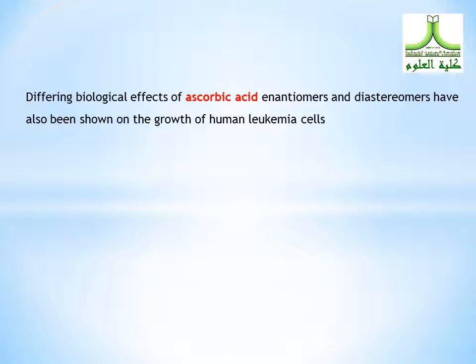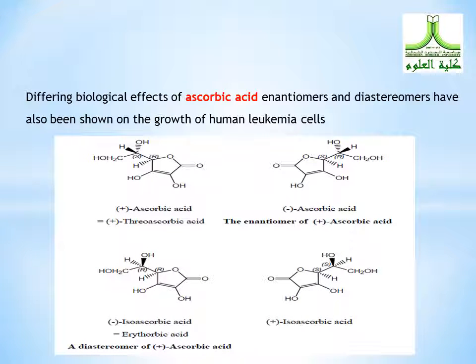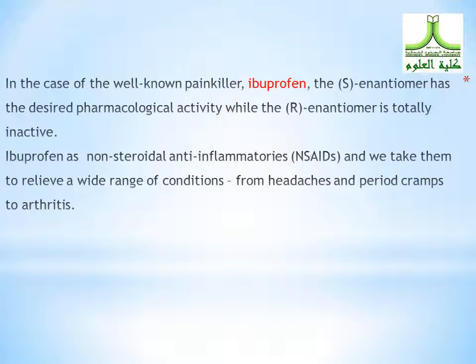Differing biological effects of enantiomers and diastereomers have also been shown in the growth of human leukemia cells. The non-steroidal anti-inflammatory drug ibuprofen has two enantiomers. The S-enantiomer has the desired pharmacological activity while the R-enantiomer is totally inactive. Ibuprofen is a non-steroidal anti-inflammatory drug and we take it to relieve a wide range of conditions, from headache and fever to arthritis.